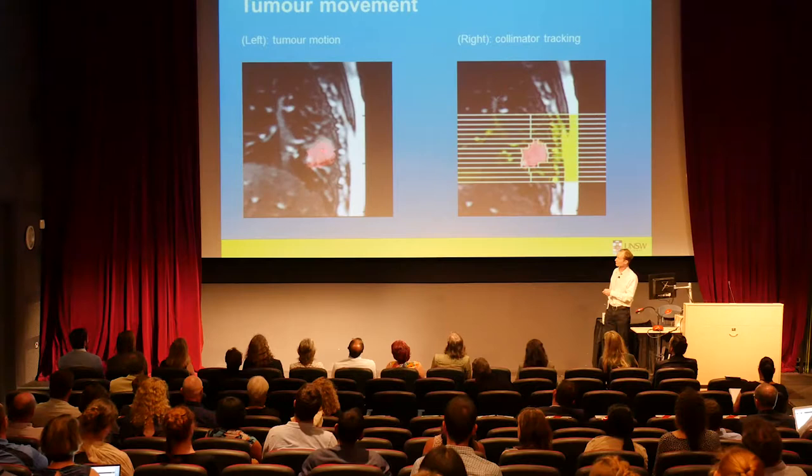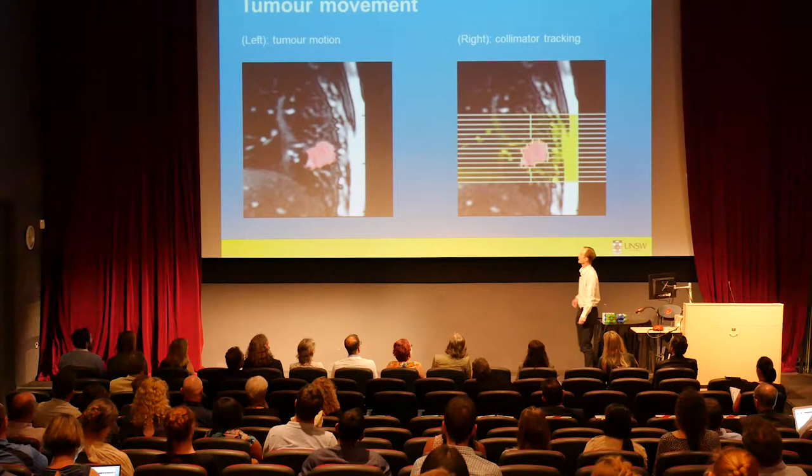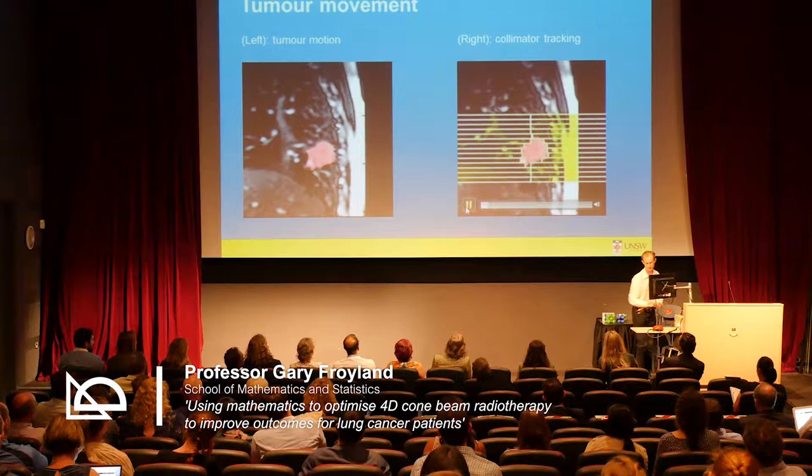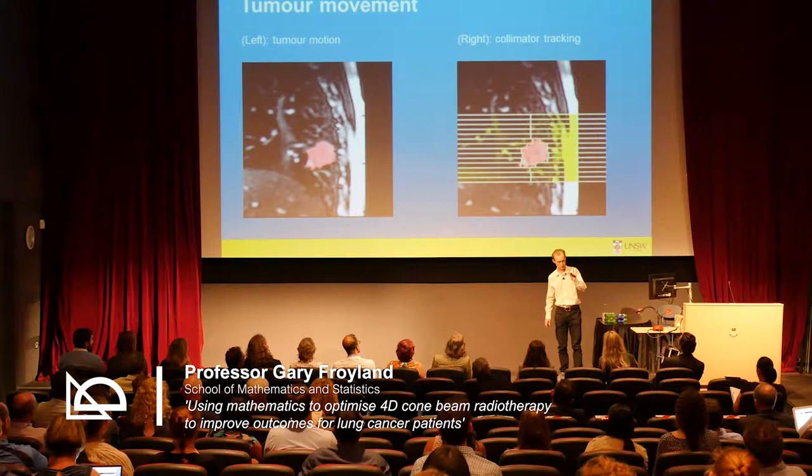On the left you can see a tumour moving in the lung — the orientation is as if you were looking at me. As I breathe in, my diaphragm goes up, the lung goes up, and the tumour on my lung moves up. These days you can have fancy lead collimators — those yellow bars — that restrict where the x-rays can go. They can move and track with the tumour so that the surrounding tissue is not overly irradiated.